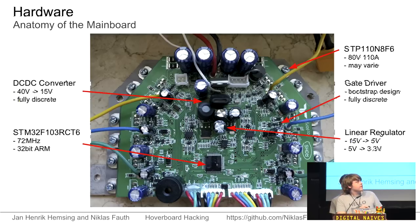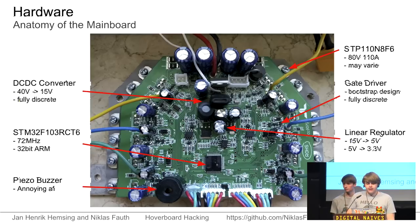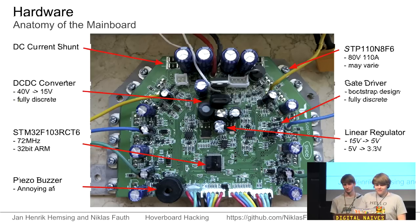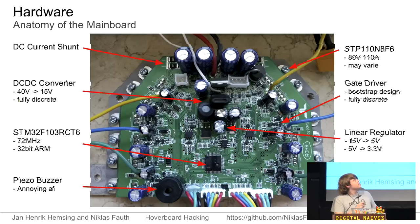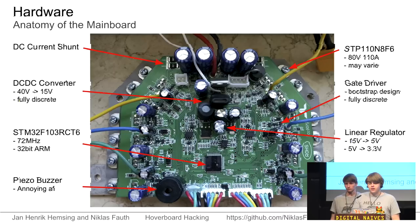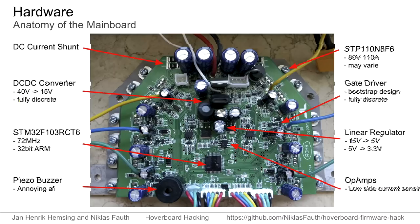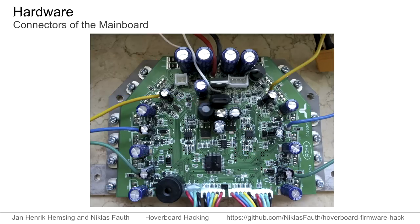The Chinese solder in whatever they found on the local market, so these components vary a lot - you can even find different MOSFET types in one assembly. The gate drivers are fully discrete, which is quite nice because if one blows you can simply replace it by fixing the individual transistors that might be broken. We have a piezo buzzer which is very important. We have two ways of measuring current in the motor: a DC current shunt to measure current flowing into or from the battery, and current sensing via two low-side MOSFETs via op-amps that amplify the very low RDS-on signal.